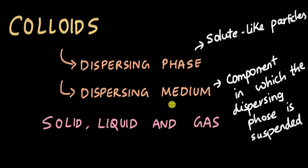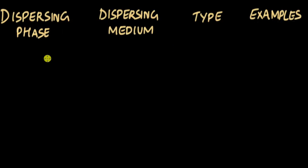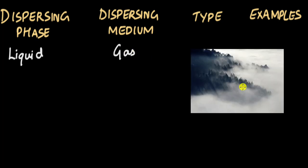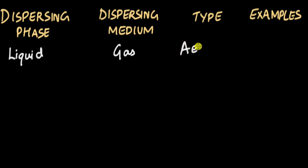Let's look at different types of colloids. First, if the dispersing phase is liquid and the dispersing medium is a gas, this is the case when we see fog, mist, or even clouds. This type of colloid is called an aerosol. Examples include fog, mist, and clouds.